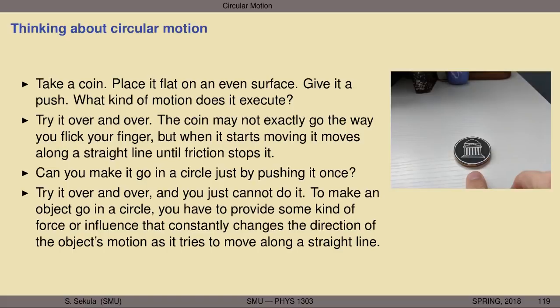These simple experiments reveal that objects in motion tend to remain going in the direction they were traveling unless acted upon by some other influence that alters direction or speed. The coin slows down because of friction, but its direction of motion is determined by how you flick it — and you just can't make it go in a circle unless you constantly influence the coin. Why does the Moon continue to circle the Earth even though nothing seems to be touching it? The 28-day orbit must be accomplished by some force that keeps the Moon forever changing its direction so it remains in a circular path.